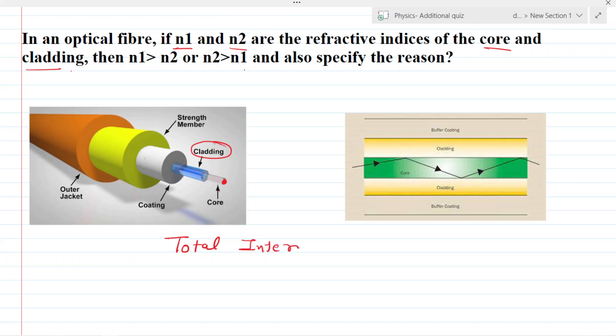Total internal reflection. Because the signal is transmitted from the core and its intensity should be retained, that means the losses of energy should be minimum. In order to do this, the signal should not escape from this core material.